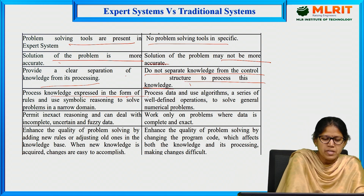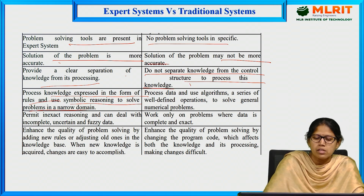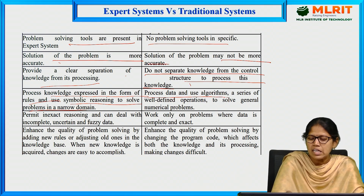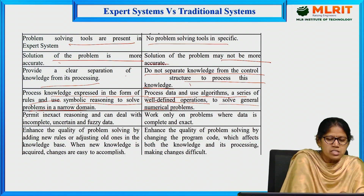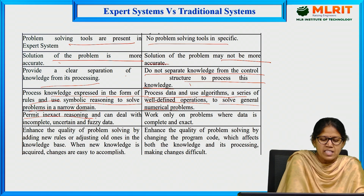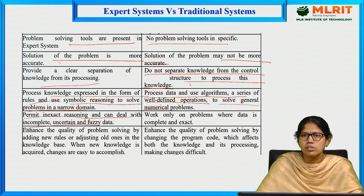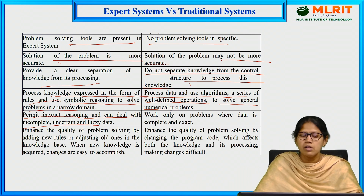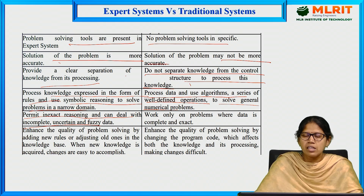Expert systems process knowledge expressed in the form of rules and use symbolic reasoning to solve problems in a narrow domain. Traditional systems process data and use algorithms — a series of well-defined operations — to solve general numerical problems. Expert systems also permit inexact reasoning and can deal with incomplete, uncertain, and fuzzy data. Even with irrelevant or incomplete data, they try to give some solution.